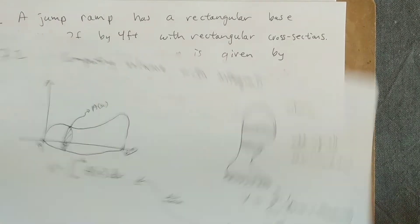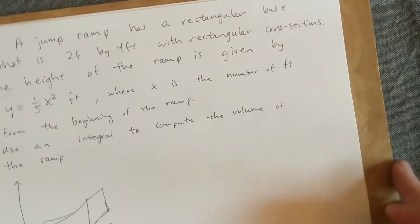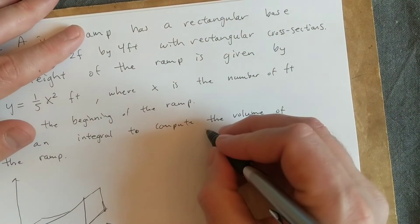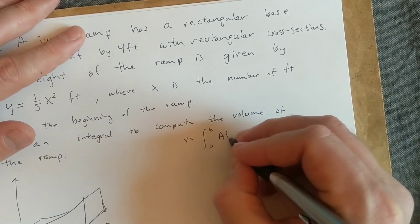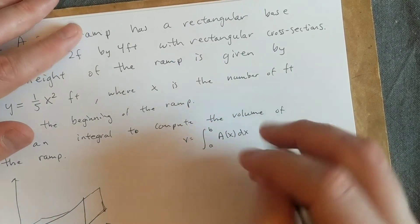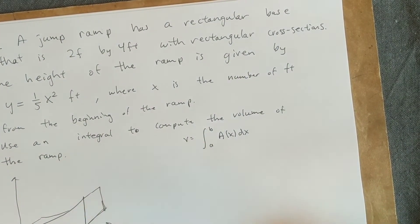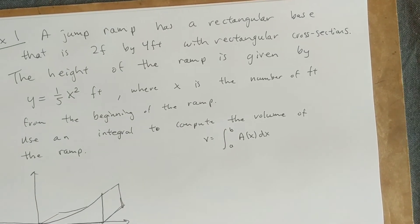All right, so this is the formula we're using. So the whole idea in the end is that if we can get a function that tells us the area at each cross-section, then we'll be able to compute the volume.